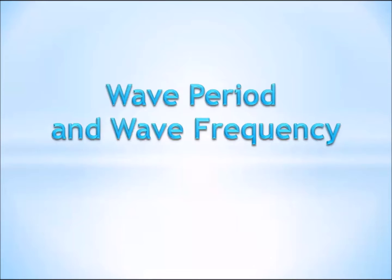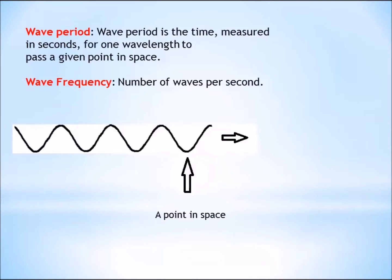We're going to start out with a couple of simple definitions. The first definition is wave period. Wave period is the time measured in seconds for one wavelength to pass a given point in space. And wave frequency is simply the number of waves that pass a point per second.